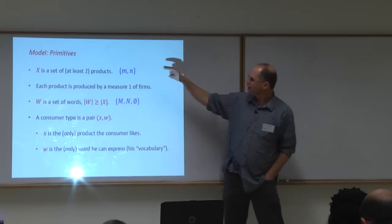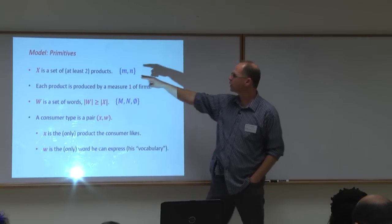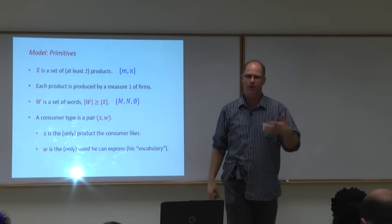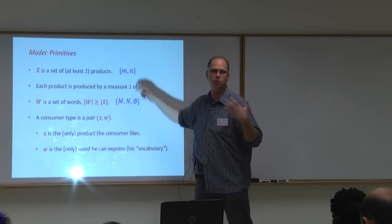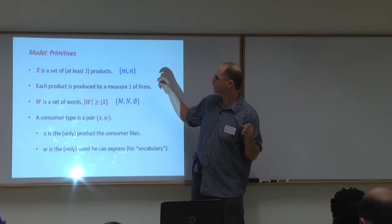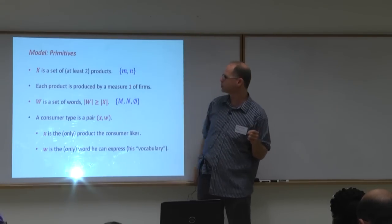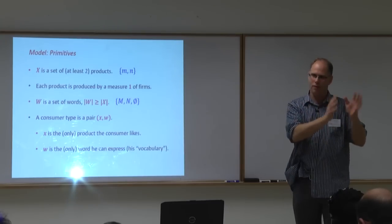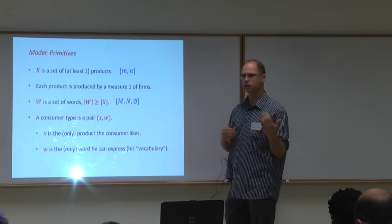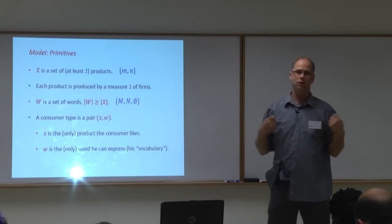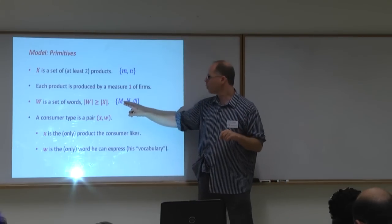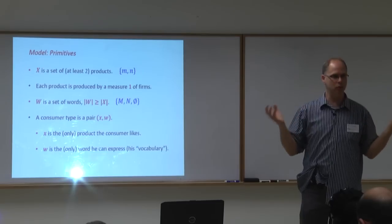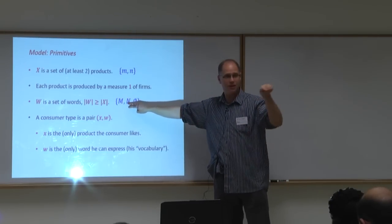Let me present the model primitives using a running example. There will be a set of products X — at least two. In the classical music story, m denotes a mass product (the relatively popular one, like Mozart) and n is a niche product (like Stravinsky). Each product is produced by a measure one of firms, each firm producing just one type of product. There's a set of words or keywords: capital M (Mozart), capital N (Stravinsky), and phi (the general category, 'classical music').